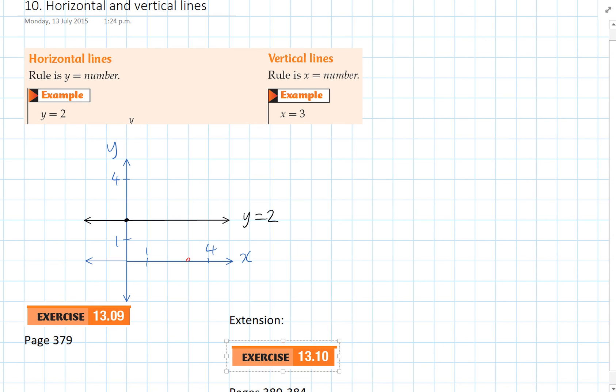So x equals 3 just means a dot at the x axis and then a line that goes through that dot. And that gives us our line x equals 3.